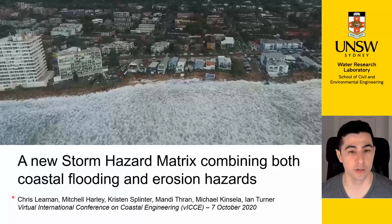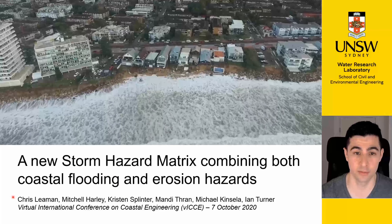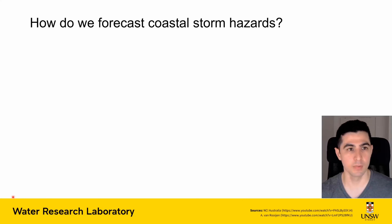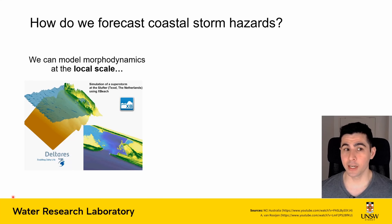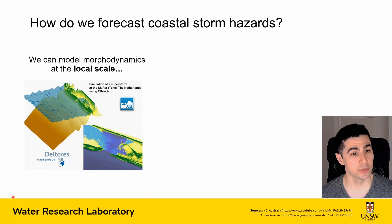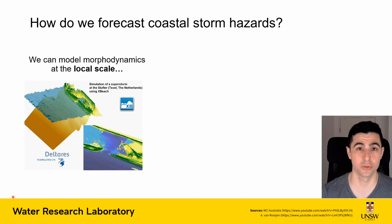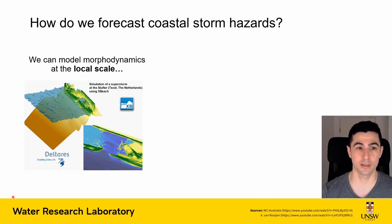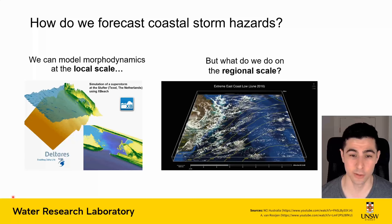My work is focused on how do we actually go about understanding or predicting where these events are going to happen — how do we go about forecasting storm hazards? At the local scale we're pretty good; we can use tools like XBeach to really understand the processes and the response of the beach and dune system to any hydrodynamic forcing. But XBeach requires a lot of computational power, it requires calibration, and this is infeasible at the regional scale.